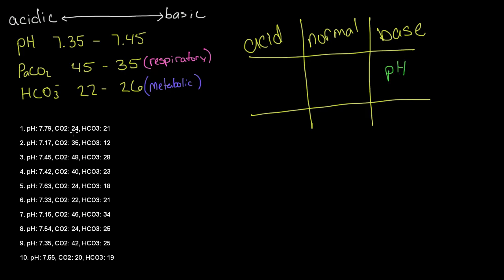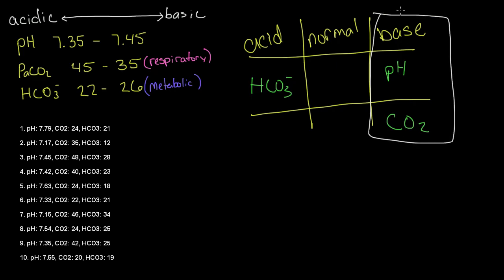We look at our CO2. It is 24 — it is also a base, so we write down our CO2 in the base column. Our bicarb is 21, it is acidic, so we write down our bicarb in the acid column. Our tic-tac-toe was formed with these three parameters.